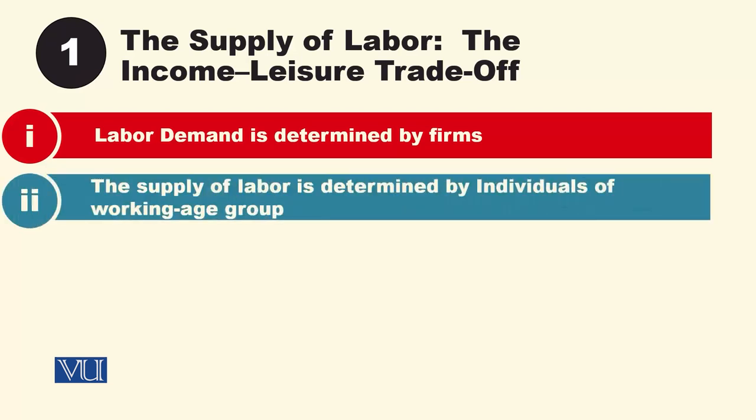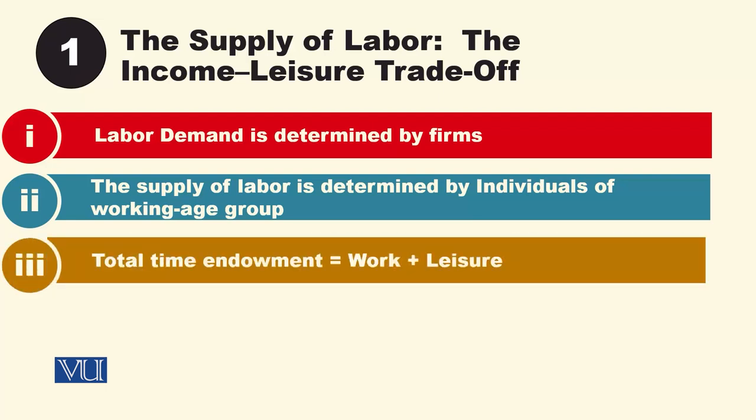But labour supply is determined by individuals in the working age group. Working age group means any person above 10 years of age is considered in this working age group. Each individual in the working age group determines labour supply.